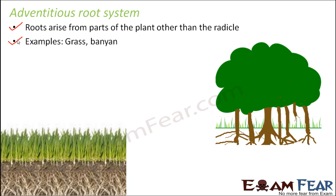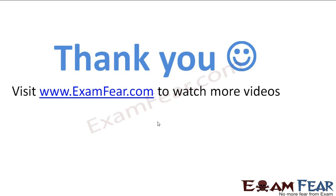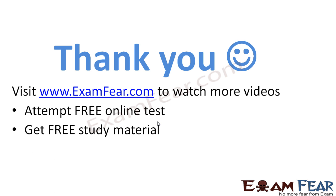So broadly, the different types of roots are: first, the primary root system, where roots develop from the radicle — subdivided into tap root system, where one single primary root develops from the radicle with branches, and fibrous root system, where there is no prominent single primary root but thin thread-like roots spread laterally. Second is the adventitious root system, where roots do not develop from the radicle but from other parts of the plant. Please visit examfew.com to watch more videos, attempt free online tests, get free study material, and find tutors and mentors.